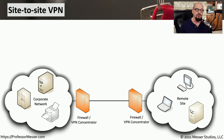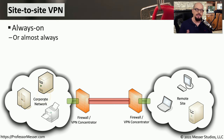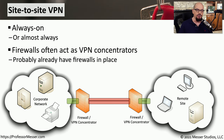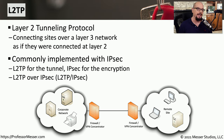We can also use VPN technology between remote locations. We might have a corporate network and a remote site and set up a VPN between VPN concentrators or firewalls. Anything running between those firewalls will be encrypted, and that firewall or VPN concentrator provides the encryption and decryption process to give the remote site access to the corporate network. Site-to-site VPNs like this are almost always connected constantly, or configured to dynamically connect whenever communication is needed. It's very easy to use those firewalls as VPN concentrators, and many site-to-site VPNs are implemented using L2TP.